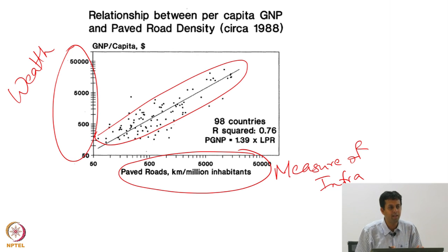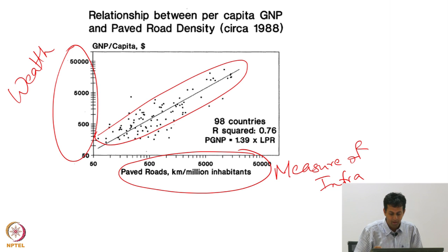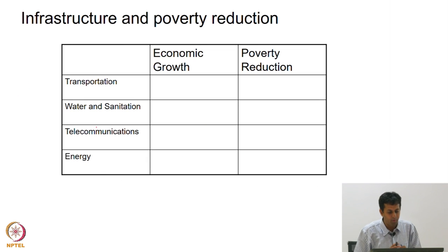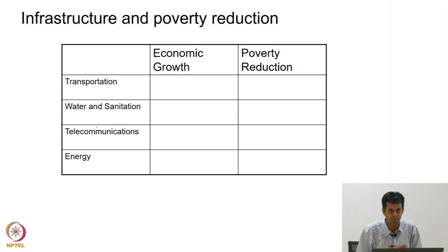In any case, if the end goal is that India should become a developed country, clearly at some point our infrastructure needs to step up. Infrastructure also does two things: it promotes economic growth, which is what we saw in the previous graph.